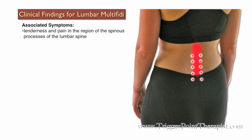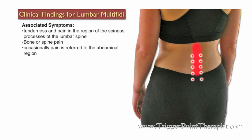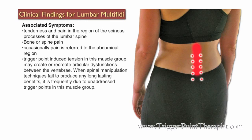Associated symptoms for trigger points in the lumbar multifidi group include tenderness and pain in the region of the spinous processes of the lumbar spine, bone or spine pain, and occasionally pain referred to the abdominal region. Trigger point-induced tension in this muscle group may create or recreate articular dysfunctions between the vertebrae. When spinal manipulation techniques fail to produce any long-lasting benefits, it is frequently due to unaddressed trigger points in the lumbar multifidi muscle group.